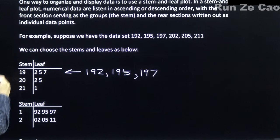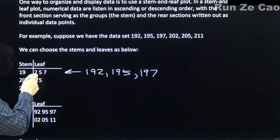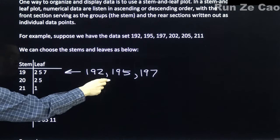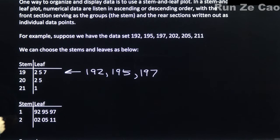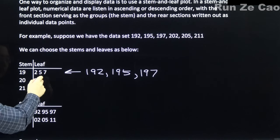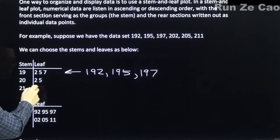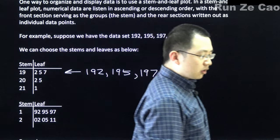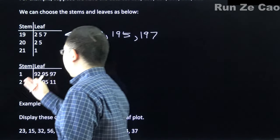The stem — the front part — is 19, and the leaves are 2 for 192, 5 for 195, and 7 for 197. For 202 and 205, the stem is 20 and the leaves are 2 and 5. For 211, the stem is 21 and the leaf is 1. You can also organize this with just the first digit as your stem.